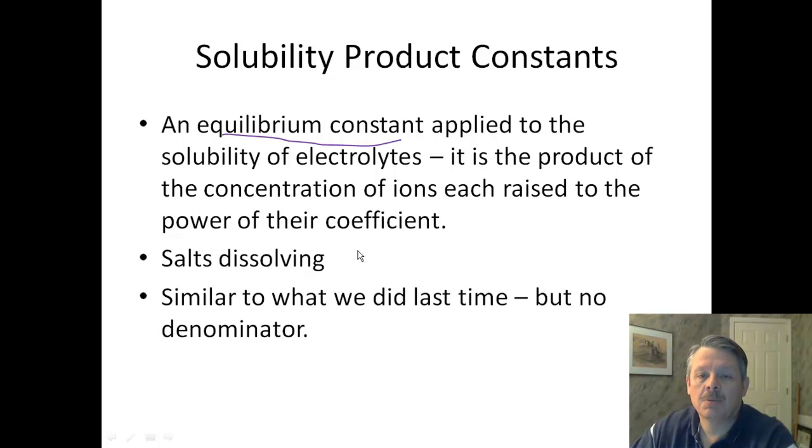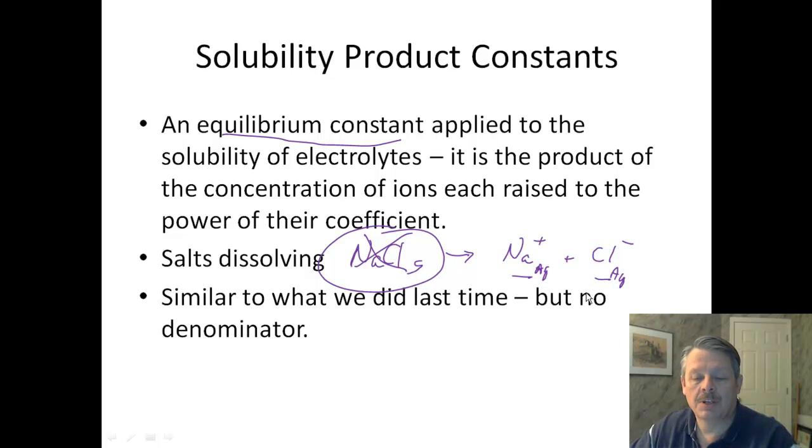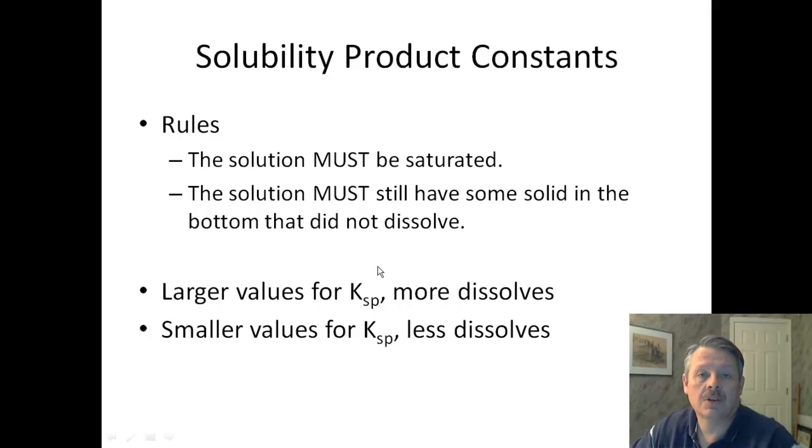So let's think, for example, about sodium chloride. We have sodium chloride, which is a solid, and it becomes sodium with a positive charge, which is aqueous, and chlorine with a negative charge, which is aqueous. Remember, we never deal with solids, so those go away. So we only have the concentrations of the two aqueous things on the right. So it's very similar to what we did last time, but there's not going to be a denominator because the reactant is a solid.